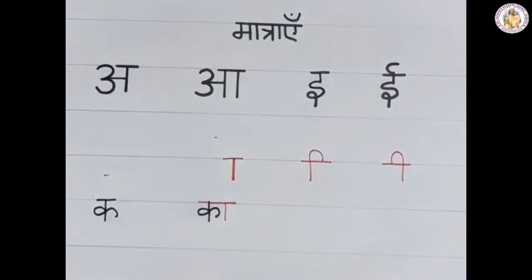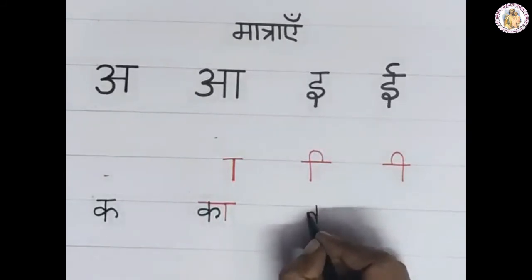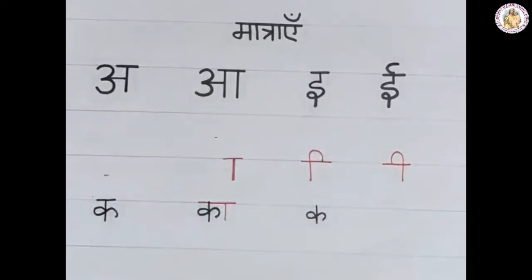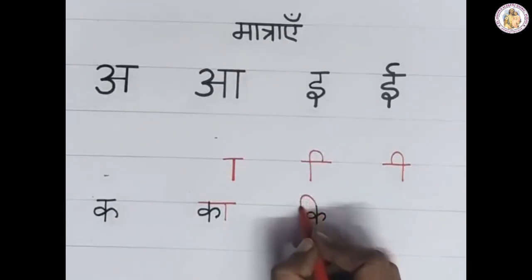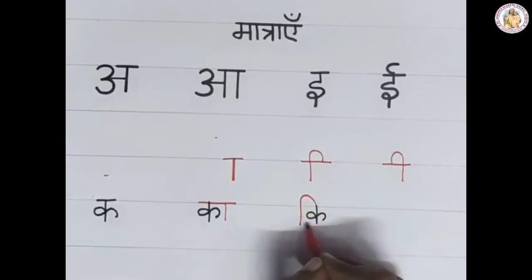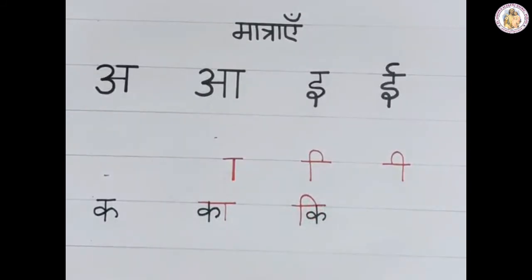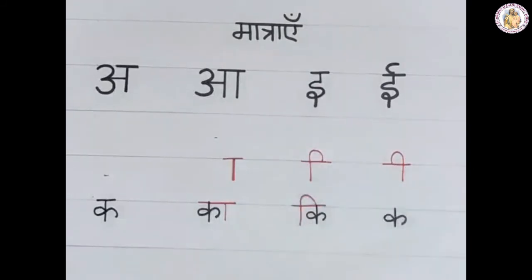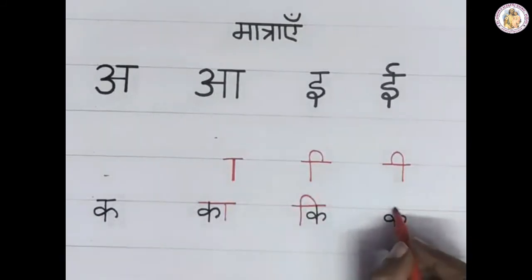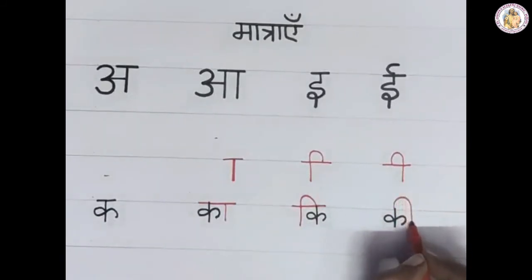Next one is the 'i' Matra (Choti i). Write the vyanjan K. On the top, draw a curve and bend it towards the bottom, to the left hand side of the vyanjan. This gives 'Ki'. For the 'ee' Matra (Badi i), write the vyanjan first. On the top of the vyanjan, draw a curve and bend it towards the right side of the vyanjan. This gives 'Kee'.